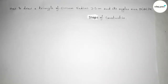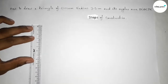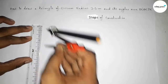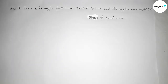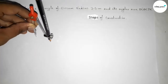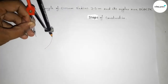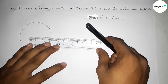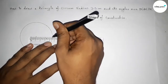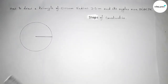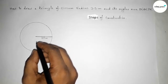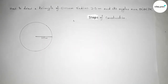First, taking the radius of 3.5 centimeters using a scale — this is 3.5 centimeters. Next, taking a point here, putting the compass on the point, and drawing a circle with radius 3.5 centimeters. Now joining the radius — this is the radius of this circle and the length of the radius equals 3.5 centimeters.